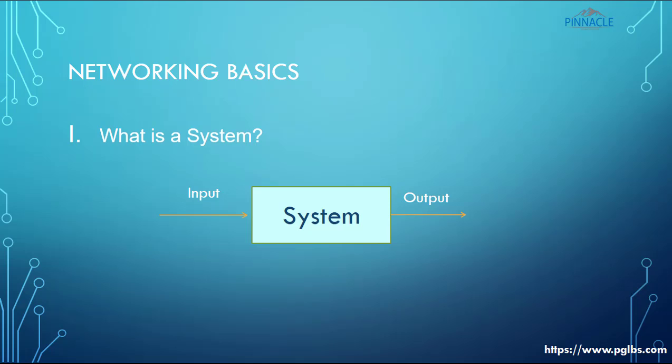Those were examples of physical systems. There are also other types, like an academic system. What is an academic system? You are all studying in a college or university. The university takes students as input and produces graduates as output. So that is also an example of a system — a collection of components which accepts some input and gives some output.